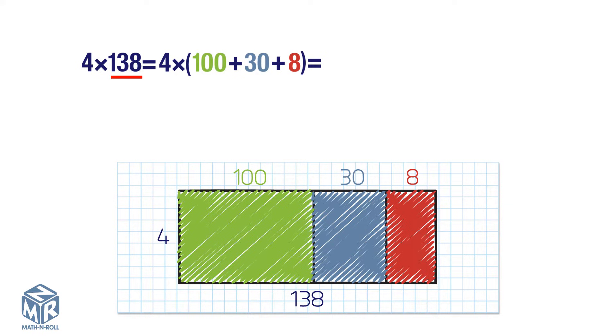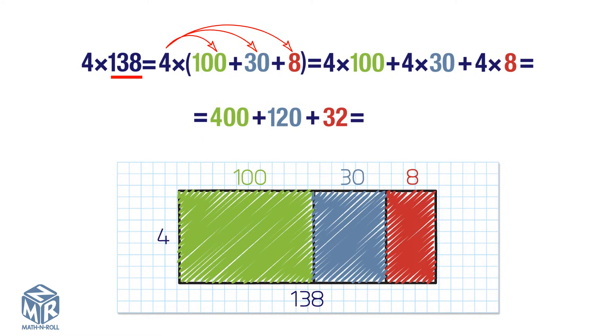Use the distributive property of multiplication to solve. 4 times 100 plus 4 times 30 plus 4 times 8. We get 400 plus 120 plus 32.